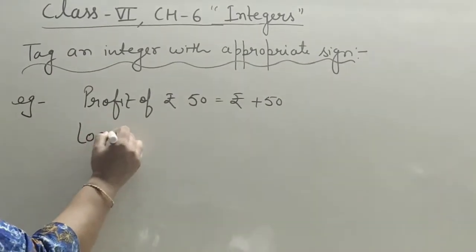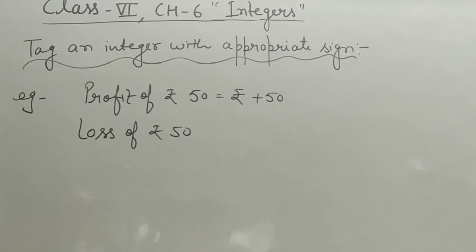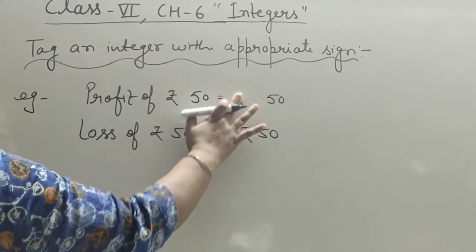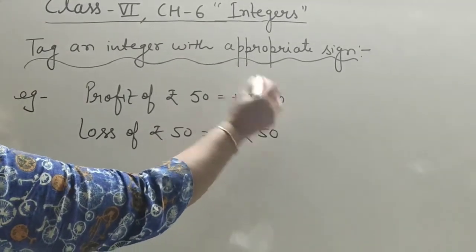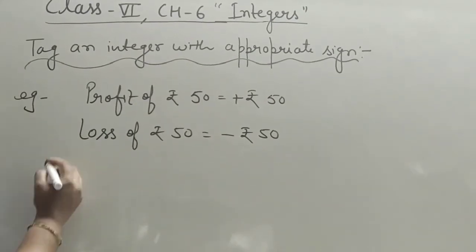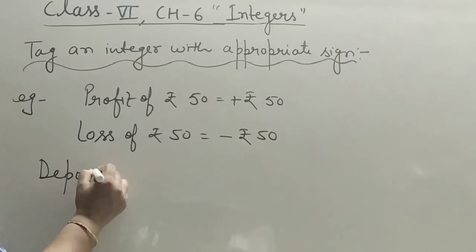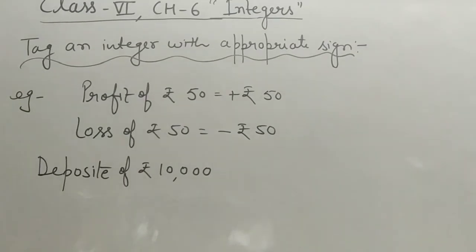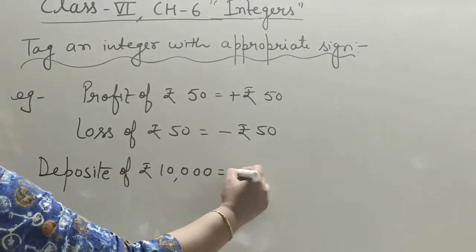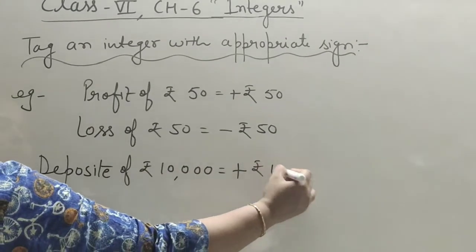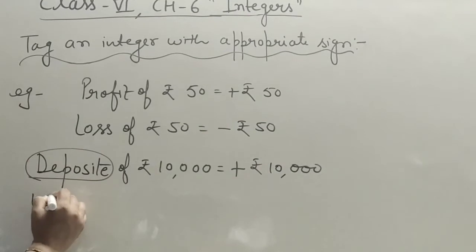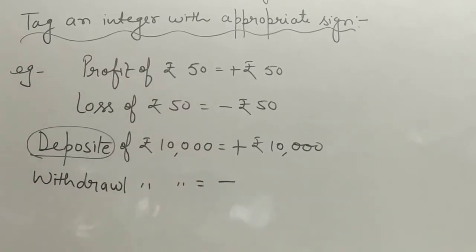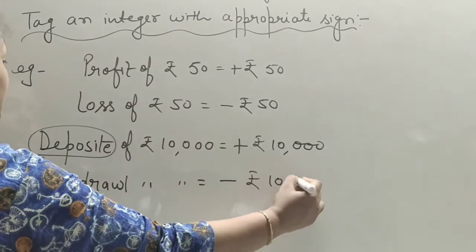Similarly, 'deposit of rupees ten thousand' — deposit means money is being added, so we write plus rupees ten thousand. The opposite word of deposit is withdrawal: 'withdrawal of rupees ten thousand' is written as minus rupees ten thousand.